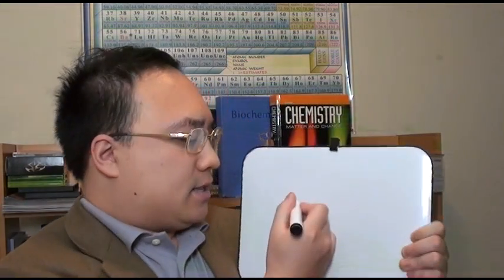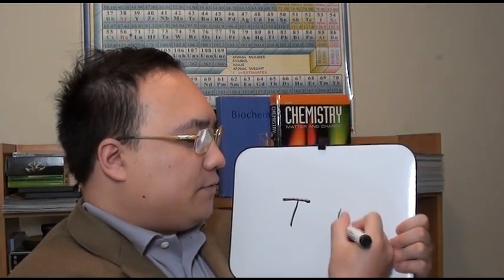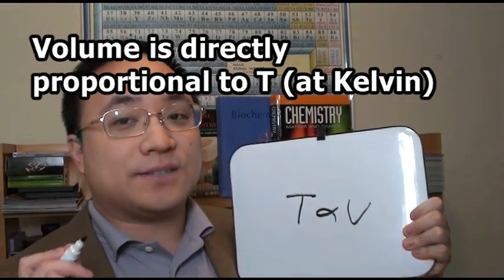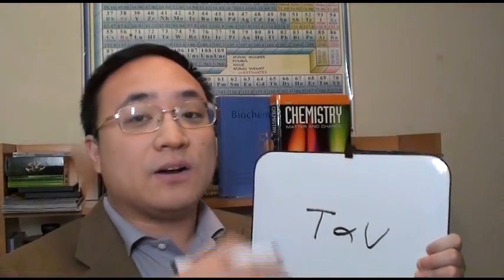Anyway, Charles' law states that in a closed system with constant pressure, so pressure is of no concern to us in this law, the temperature and the volume are directly proportional to each other. So, if one goes up, the other one goes up, they increase together, they decrease together.